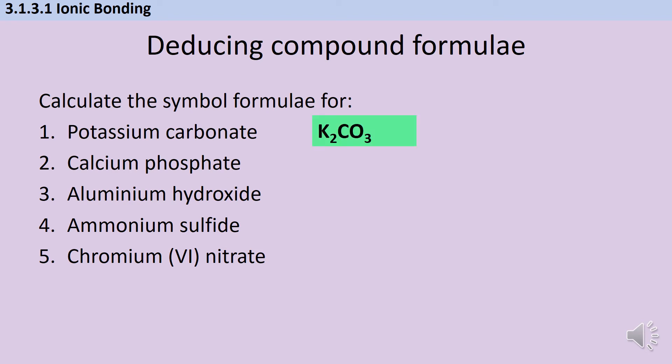Potassium carbonate is K2CO3, because potassium has single plus charge whereas carbonate has 2- charge, so we need 2 potassiums to balance. Calcium phosphate is Ca3(PO4)2. Use brackets to say it's the entire phosphate ion that's there 2 times, not just the oxygen or phosphorus. Aluminium hydroxide is Al(OH)3. Ammonium sulfide is (NH4)2S. Chromium(VI) nitrate needs 6 nitrate ions to balance that hexavalent chromium, so Cr(NO3)6.